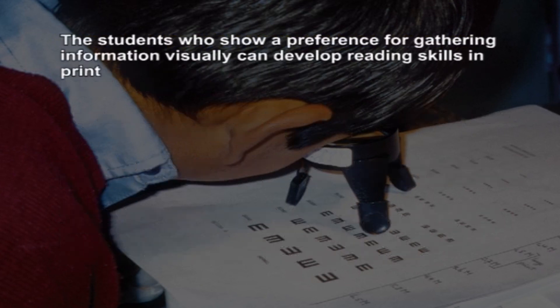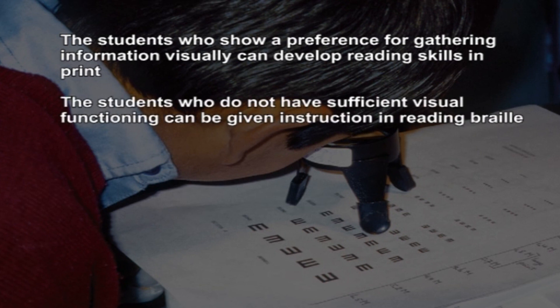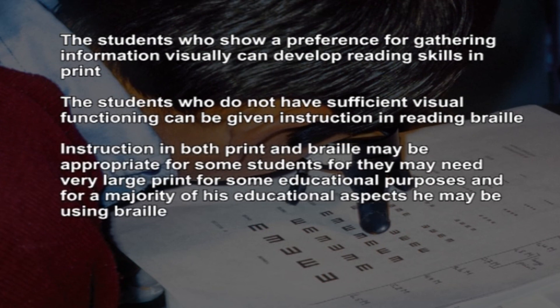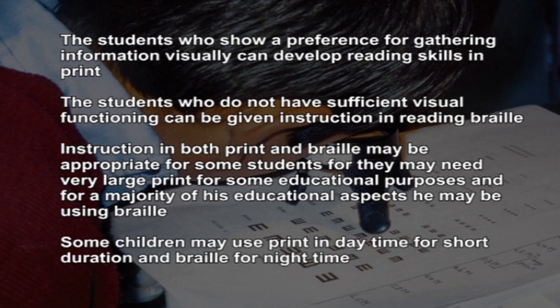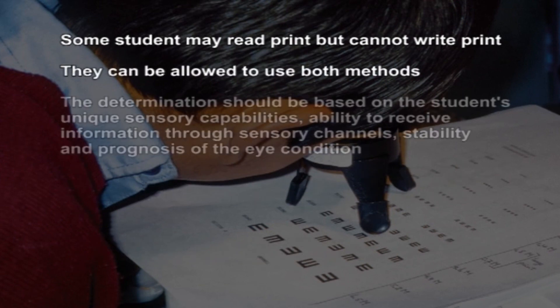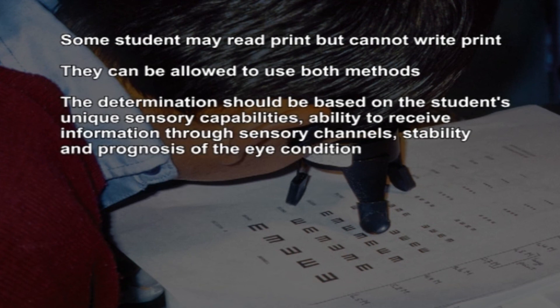Students who show a preference for gathering information visually can develop reading skills in print. Students who do not have sufficient visual functioning can be given instruction in reading Braille. Instruction in both print and Braille may be appropriate for some students, who may need very large print for some educational purposes while using Braille for the majority. Some children may use print in daytime for short durations and Braille at night. Some students may need print but cannot write print and can be allowed to use both methods. The determination should be based on the student's unique sensory capabilities, ability to receive information through sensory channels, and stability and prognosis of the eye condition.